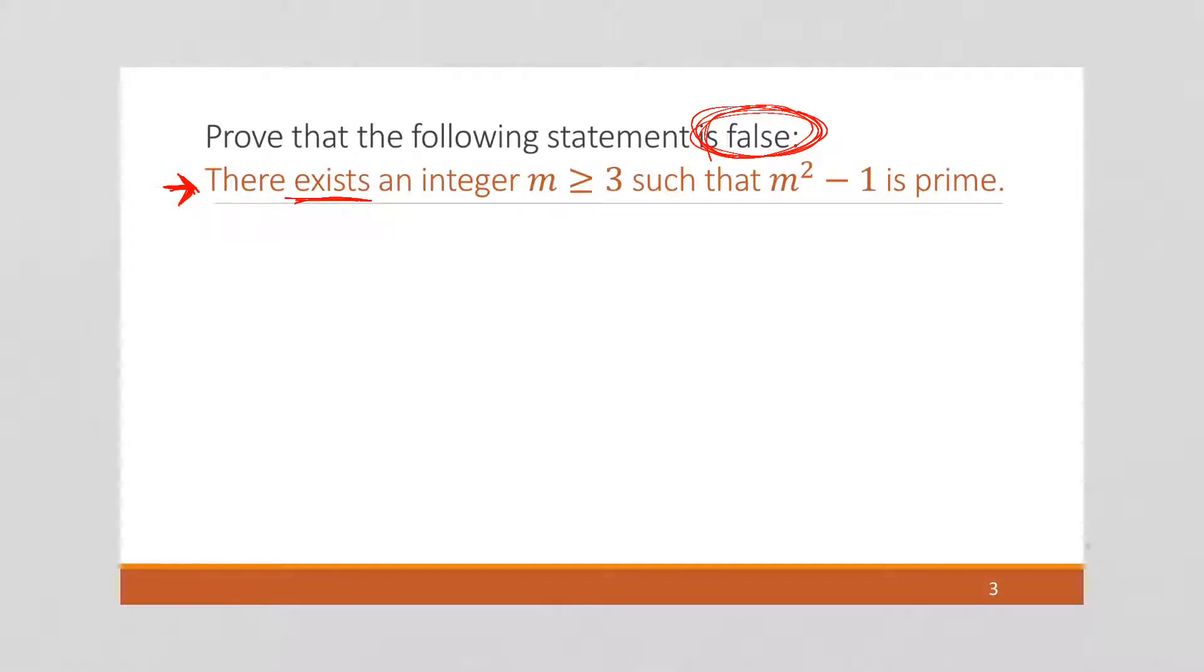So if this statement is false, that means the negation is true. Alright, remember back to module one. A statement and its negation are opposites of one another. So if a statement is true, its negation is false. If a statement is false, its negation is true.